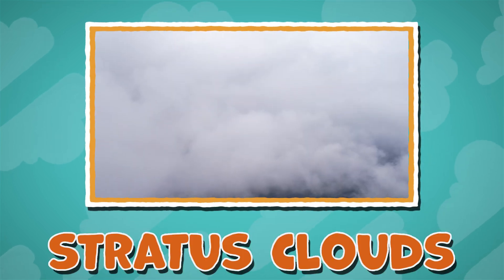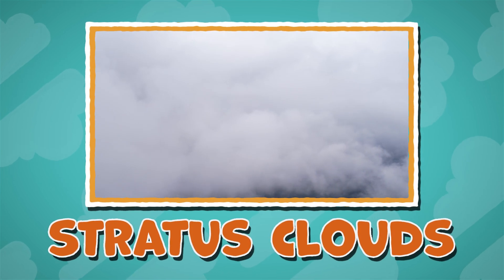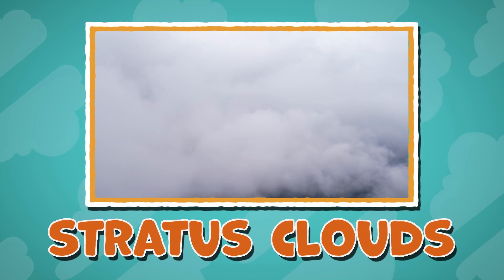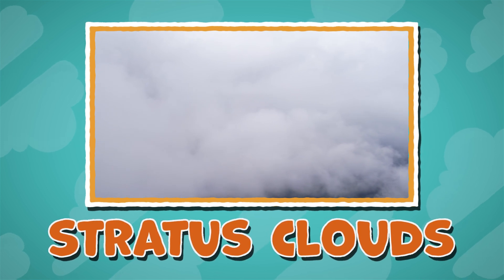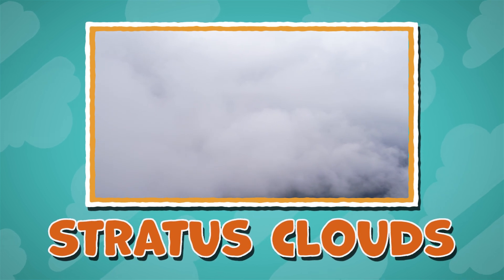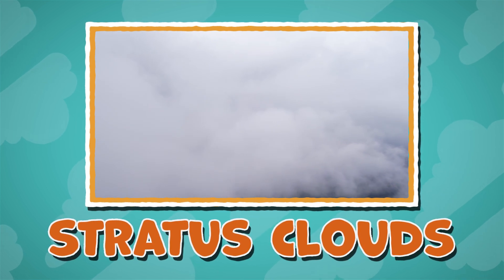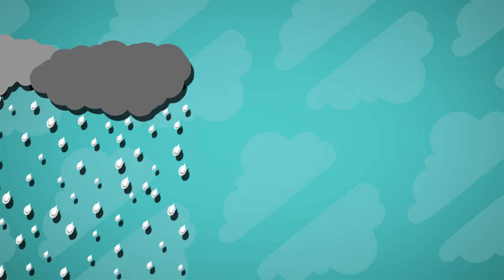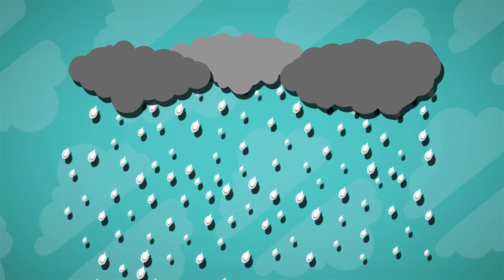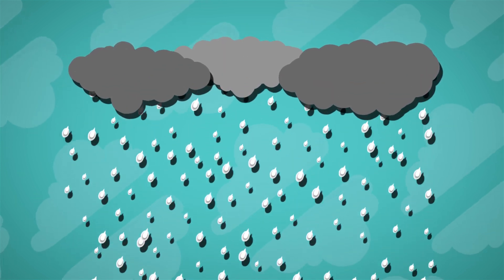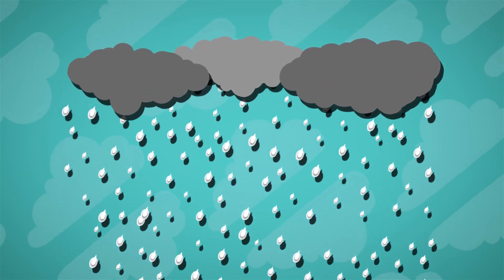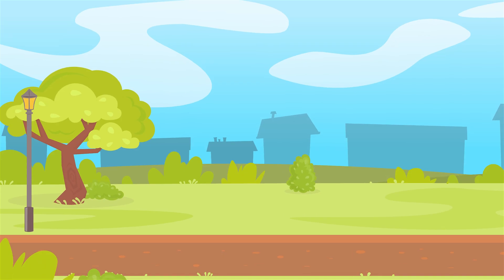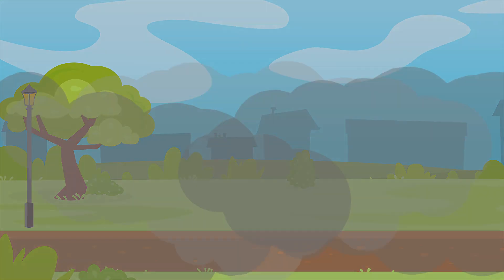Stratus clouds. These clouds form a blanket of cloud that is low down in the air. Stratus clouds produce rain or snow if the weather is very cold. They can also form fog on the ground.